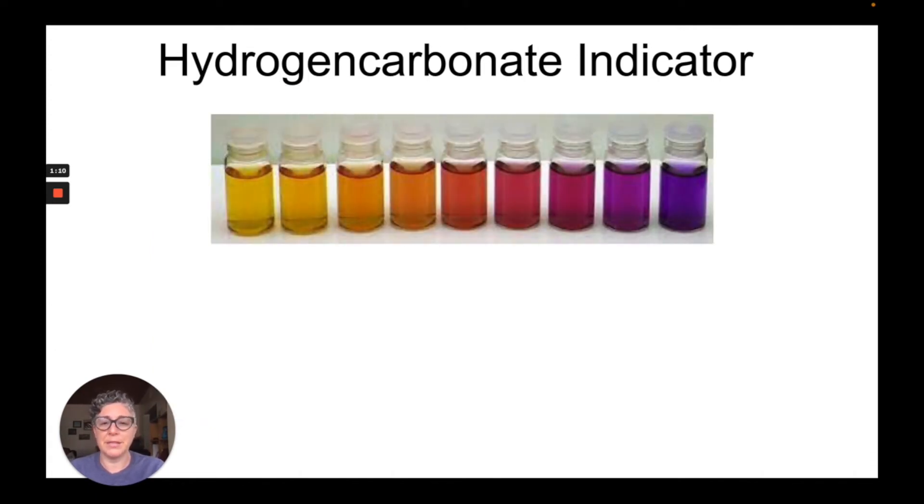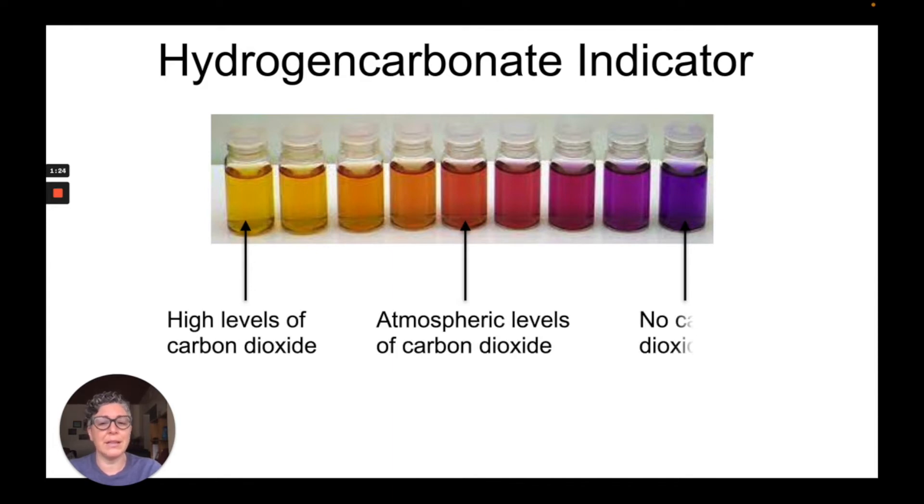Hydrogen carbonate indicator can come in a variety of shades as pictured here. The three that we're mostly interested in are the two extremes and the middle of the road normal conditions. The yellow is high levels of carbon dioxide. The orangey pink is atmospheric levels of carbon dioxide, and purple is no carbon dioxide present. So all carbon dioxide has been removed from the presence of that indicator. These are the three colors that we're interested in.